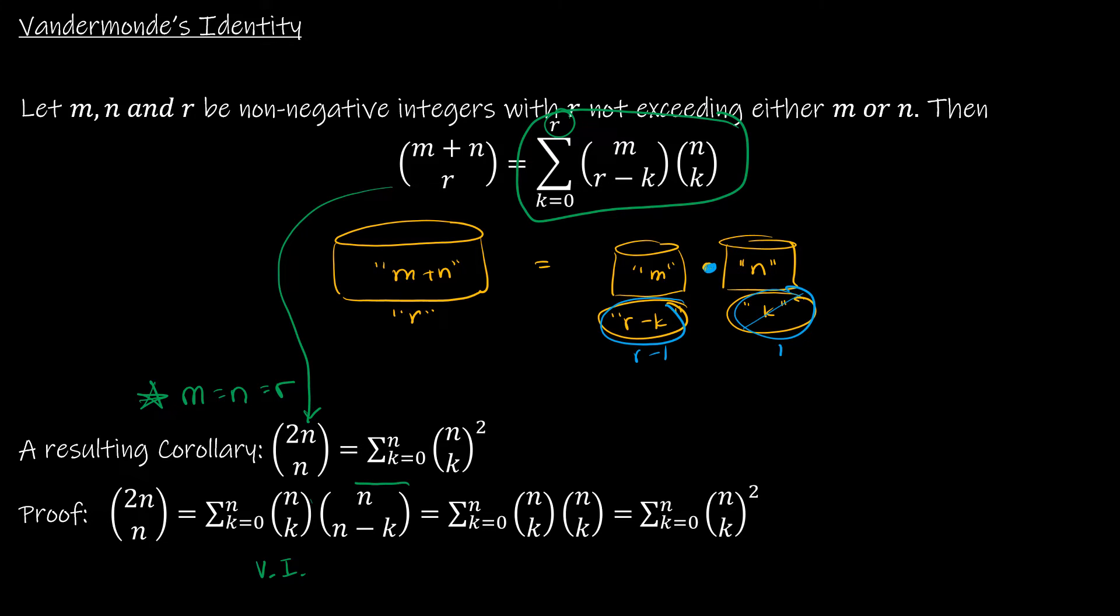Now I'm going to use another identity, and I don't think it really has a name, but we used an identity in our last video, I believe, or maybe the one before last, that says n choose n minus k is the same as n choose k.